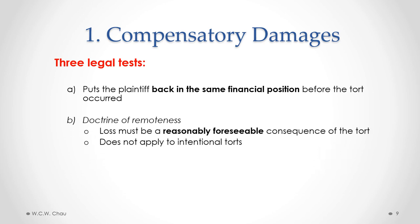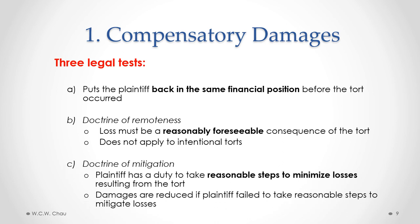The second test is called the doctrine of remoteness, which limits claims to only those losses that can be reasonably foreseen as a consequence of the tort. If a loss is not a reasonably foreseeable consequence, it is not allowed. This doctrine of remoteness does not apply to intentional torts — it applies to negligence torts. The third test is the doctrine of mitigation, which says the plaintiff has a duty to take reasonable steps to minimize losses arising from the tort. If the plaintiff does not take those reasonable steps, the damages they're entitled to are reduced.